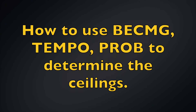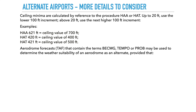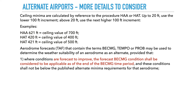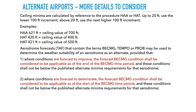Another thing to consider when using the TAF is that you can use the BECMG, TEMPO, and probability conditions to determine the ceiling at your alternate, but the way you use them is a little different. If the conditions are forecast to improve in the TAF, the forecast BECMG condition shall be considered applicable as of the end of the becoming period, and these conditions shall not be below the published alternate minimums. If the conditions are forecast to deteriorate, the BECMG condition shall be considered applicable as of the start of that becoming period, and these conditions also shall not be below the alternate minimums.